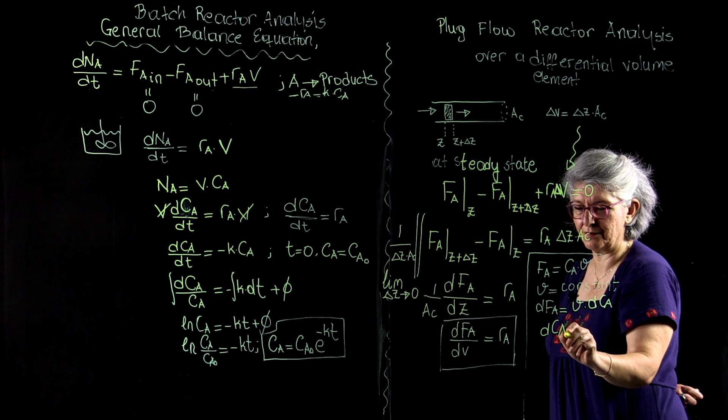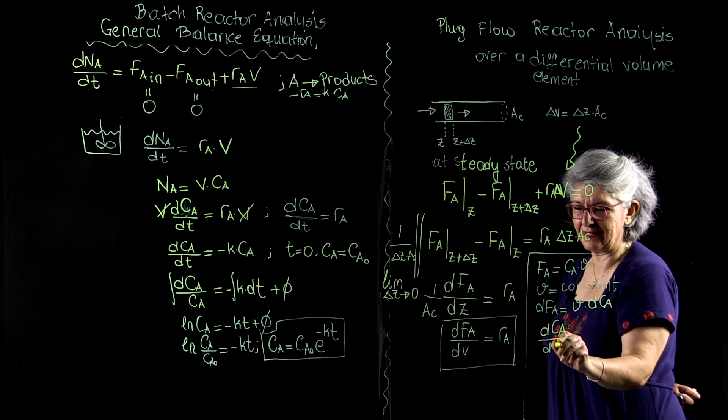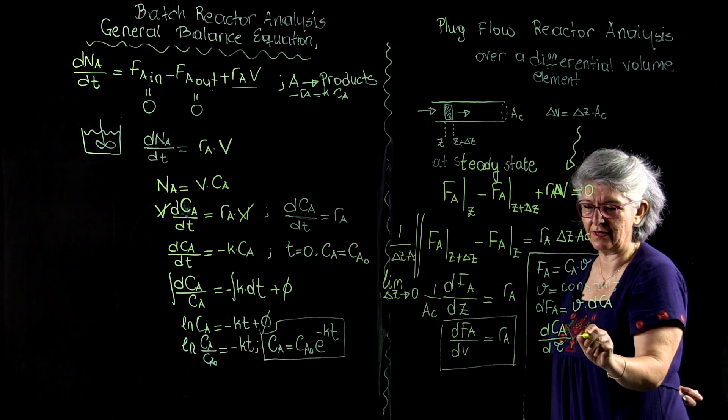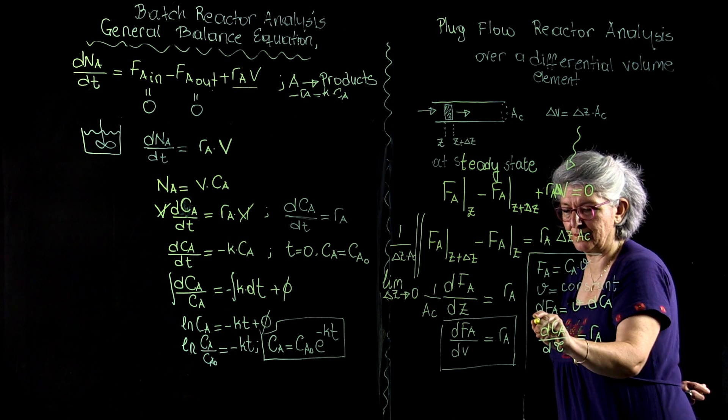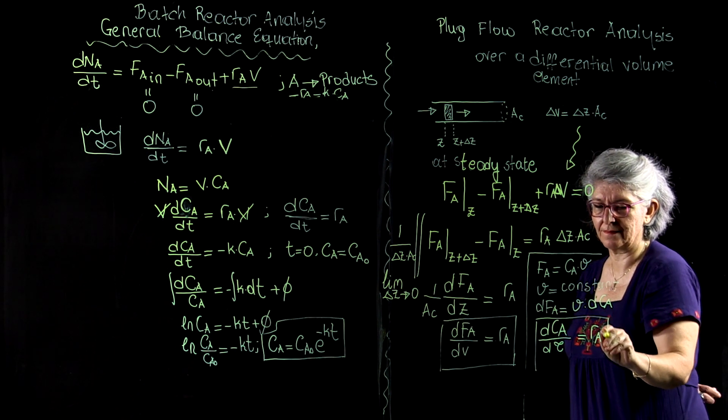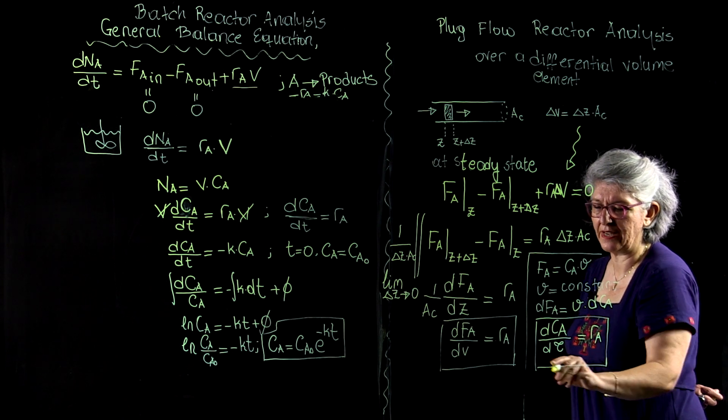So if volumetric flow rate is constant, then my dF_A can be defined as V times dC_A, and the design equation takes the following form: dC_A/dτ equals R_sub_A.